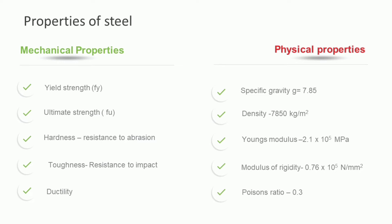The mechanical properties of steel include strength — that is yield strength and ultimate strength — hardness, toughness, and ductility. Hardness is the resistance to abrasion and toughness is resistance to impact. The physical properties include specific gravity, density of 7850 kg/m³, Young's modulus of 2.1 × 10⁵ MPa, and Poisson's ratio of 0.3. These properties are important during design problems.